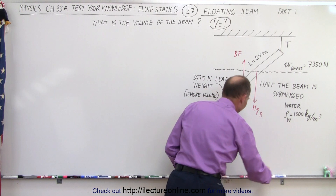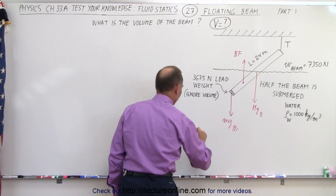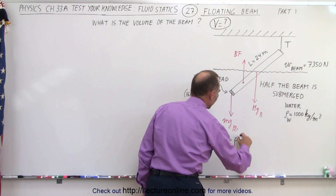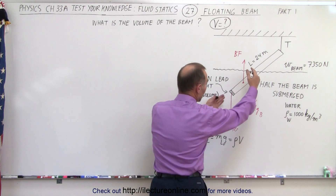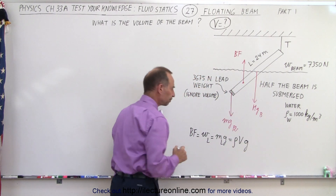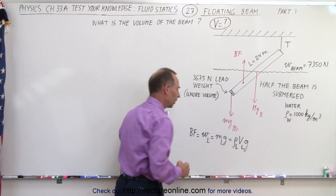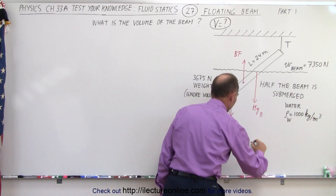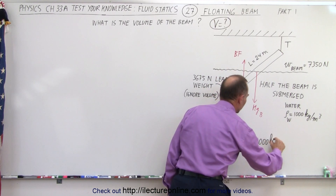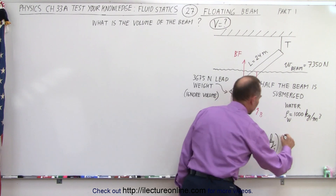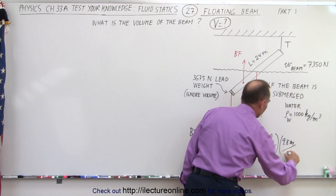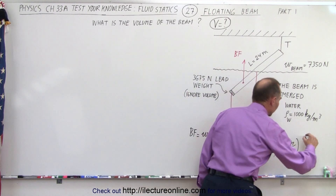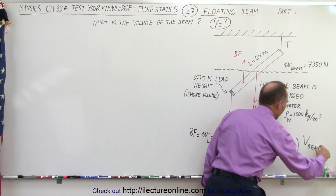Let's take a look at the buoyancy force. The buoyancy force equals the weight of the liquid, which equals the density times the volume of the submerged portion times G. The density of the liquid is 1000 kilograms per cubic meter, G is 9.8 meters per second squared, and the volume of the displaced liquid is half the volume of the beam — so the volume of the beam divided by 2.